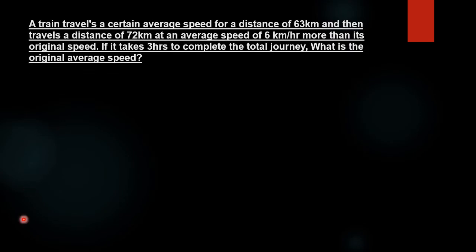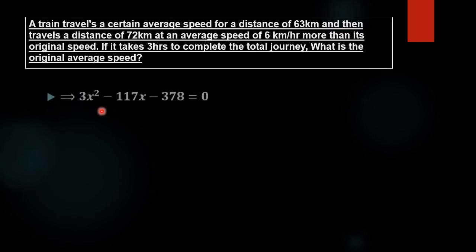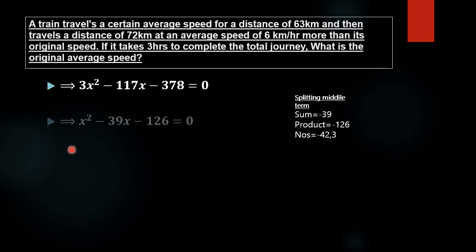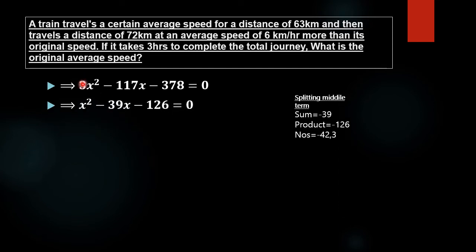We have 3x squared minus 117x minus 378 equals 0 as the simplified quadratic equation. Dividing each term by 3, we obtain a further simplified form: x squared minus 39x minus 126 equals 0.